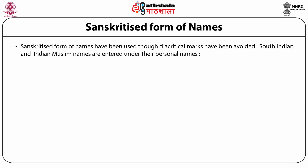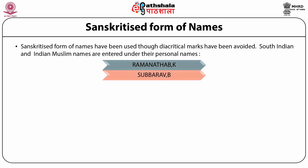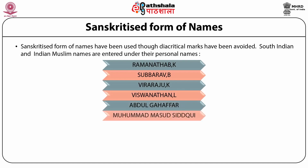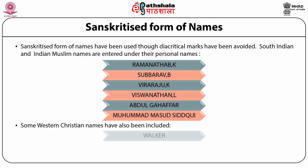South Indian and Muslim names are entered under their personal names. For example, Ramanathan K., Subbarao B., Viraraju, Vishwanathan, Abdul Ghafar, Muhammad Masood Siddiqui — these have been entered under their first name or personal name. Similarly, some Western Christian names have also been included as they occur in bibliographies or books published in India, such as Walker, Waterman, and Wilson.